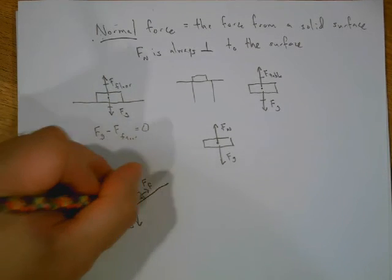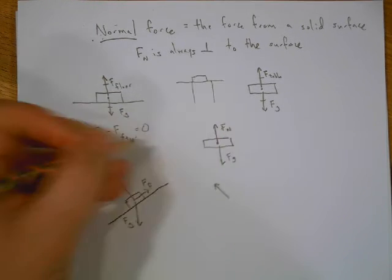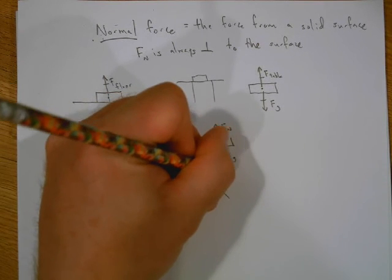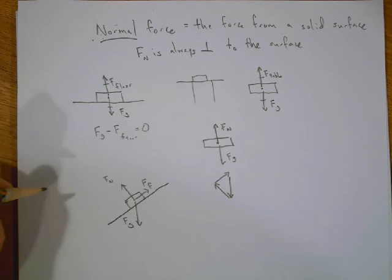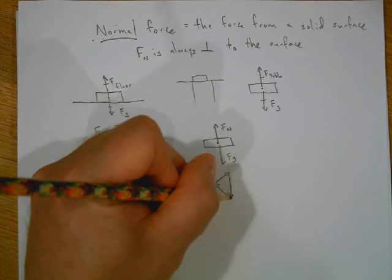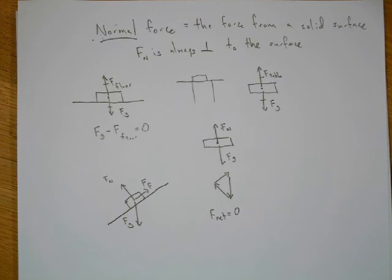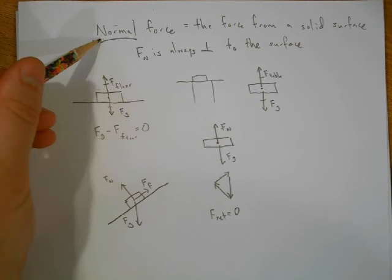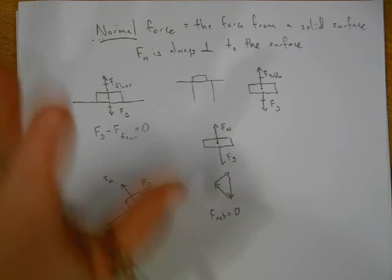is if you add all these forces up—normal force plus force of friction plus force of gravity—hey look, I end up back at my starting point. My Fnet equals zero. We'll do more of that later, but for right now I just wanted to introduce this idea of normal force.